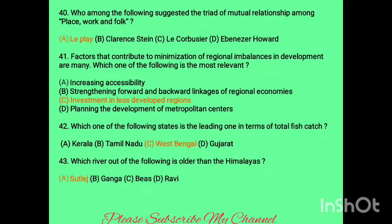Question forty: who suggested the triad of mutual relations among place, work, and folk? The answer is Le Play. Question forty-one: the most relevant factor contributing to minimizing regional imbalance in development is option C. Question forty-two: which state is one of the leading states in total fish catch? The answer is West Bengal.